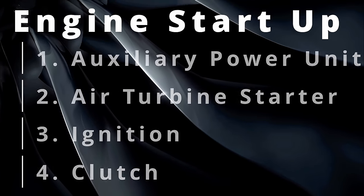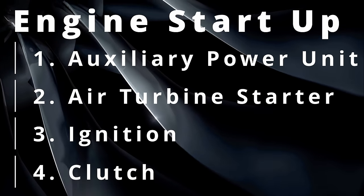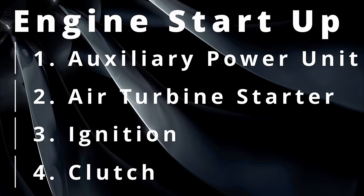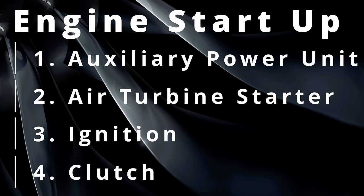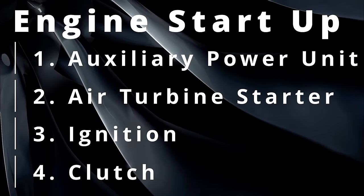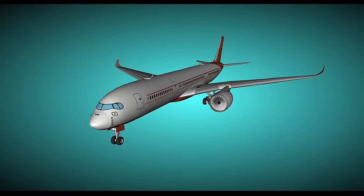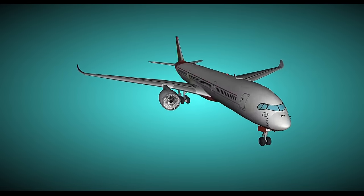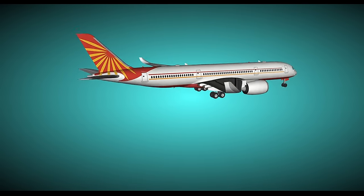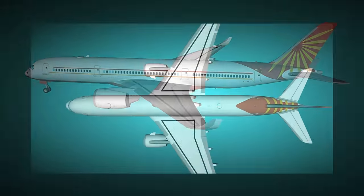Typically for a commercial aircraft there are four steps to start up: the auxiliary power unit, air turbine starter, ignition, and clutch. Here we have a bird's eye view blueprint of a typical commercial aircraft.